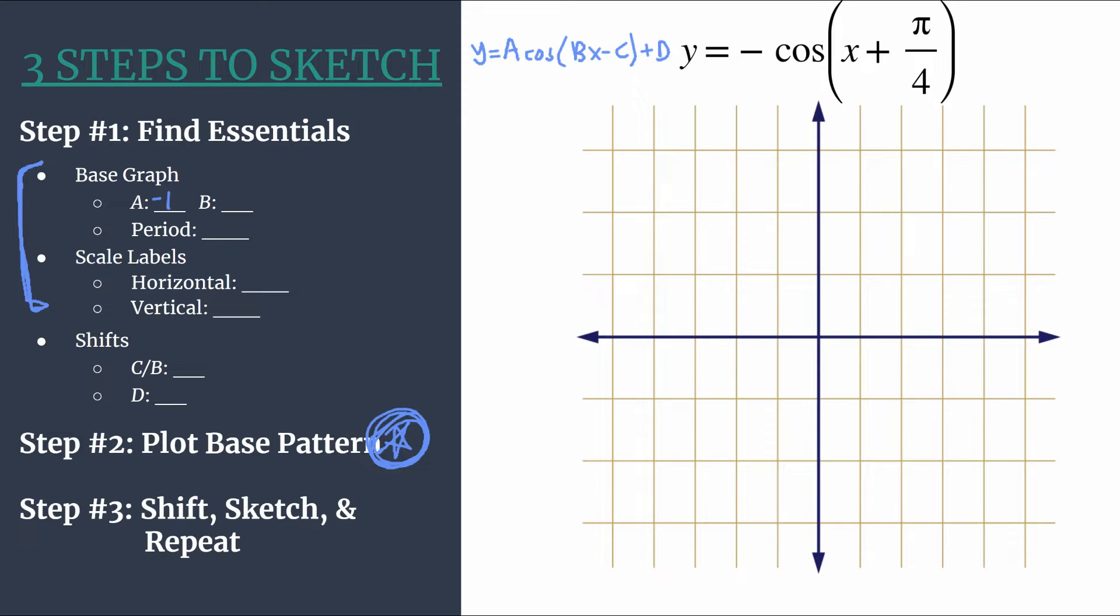Instead of max zero, min zero, we'll flip that vertically. So we'll actually end up with a graph that's minimum zero, maximum zero. All right, so we see our b is an understood one. So we should have one cycle happening between zero and two pi. And we also use b when calculating our period. We do two pi divided by b for cosine. So the period here is just two pi, length of one horizontal cycle.